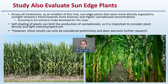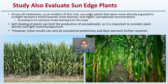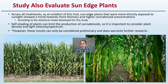The study also evaluated sun edge plants. Across all treatments, sun edge plants — those most directly exposed to sunlight — showed a trend towards more biomass and higher cannabinoid concentrations. Self-shading of plants can limit cannabinoid production, so it's important to consider plant density, light intensity, and the spectrum your plants are receiving for those growing indoors. These results are preliminary and warrant further research, but for indoor growers it highlights the importance of achieving high PAR across all plant areas.